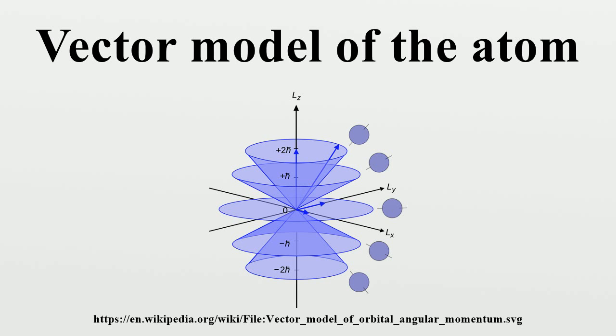where l is the azimuthal quantum number, S is the spin quantum number intrinsic to the type of particle, J is the total angular momentum quantum number, which respectively take the values.